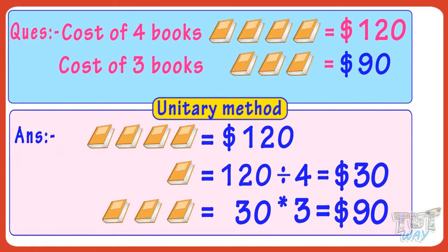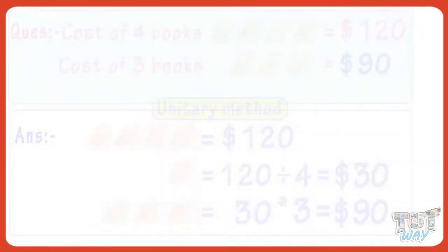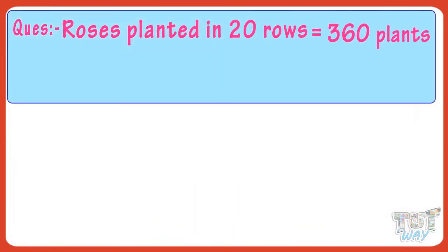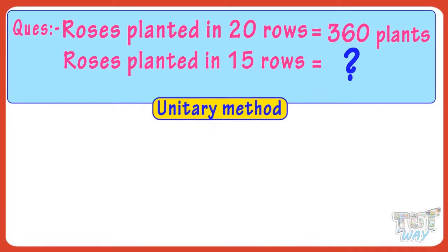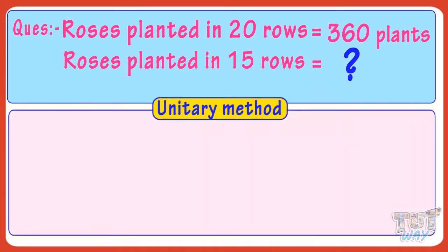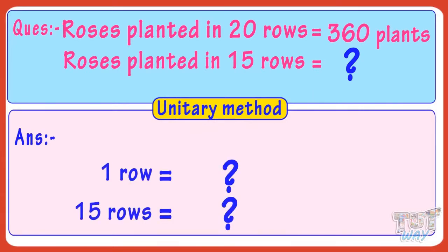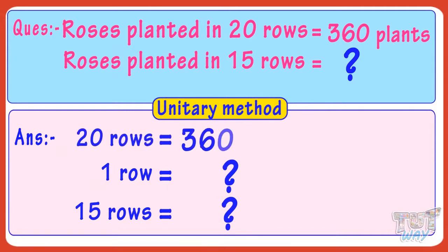Now let's take one more example. 360 rose plants can be planted in 20 rows. Then how many rose plants can be planted in 15 such rows? Let's find it out with the help of the unitary method — that is, first we will find how many plants can be planted in one row, and then in 15 rows. In 20 rows, 360 plants can be planted.